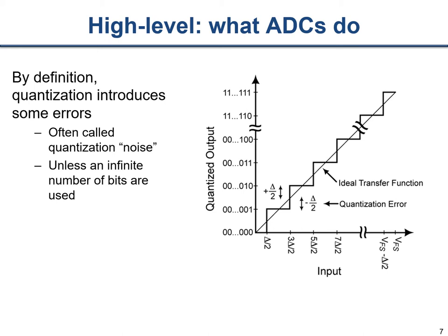Quantization errors or noise will always exist unless we have an infinite-bit ADC, which of course isn't practical, and that would also require infinite time resolution. The worst-case error is referred to as delta over 2, or plus or minus delta over 2. If your signal is very close to a quantization step, the error will be small; if it's right on the step, error is zero. If it's right in the middle between quantization steps, that's when we get the very worst-case quantization error.